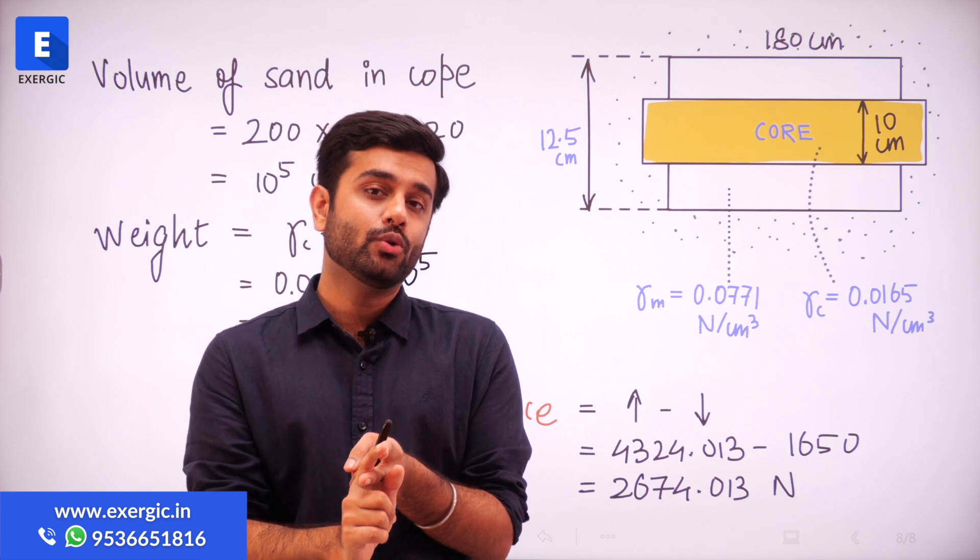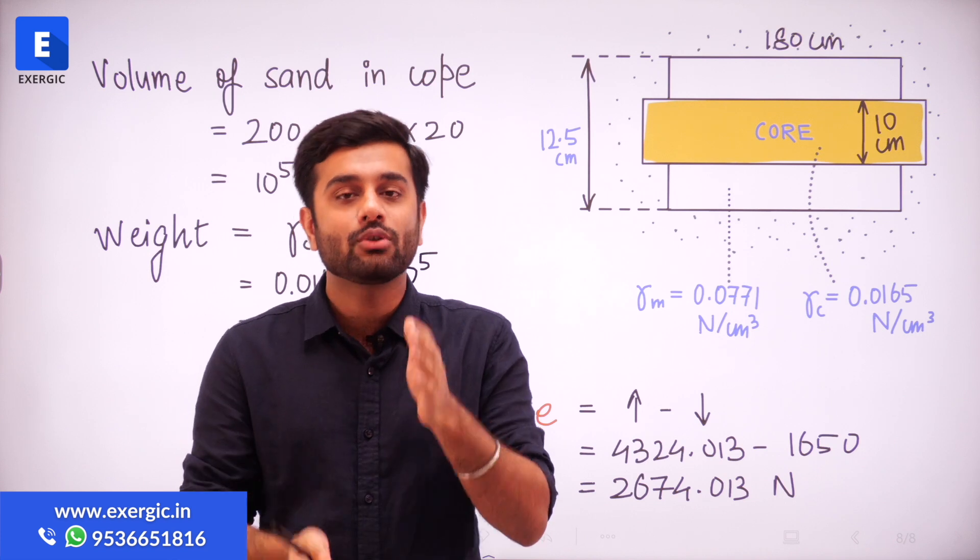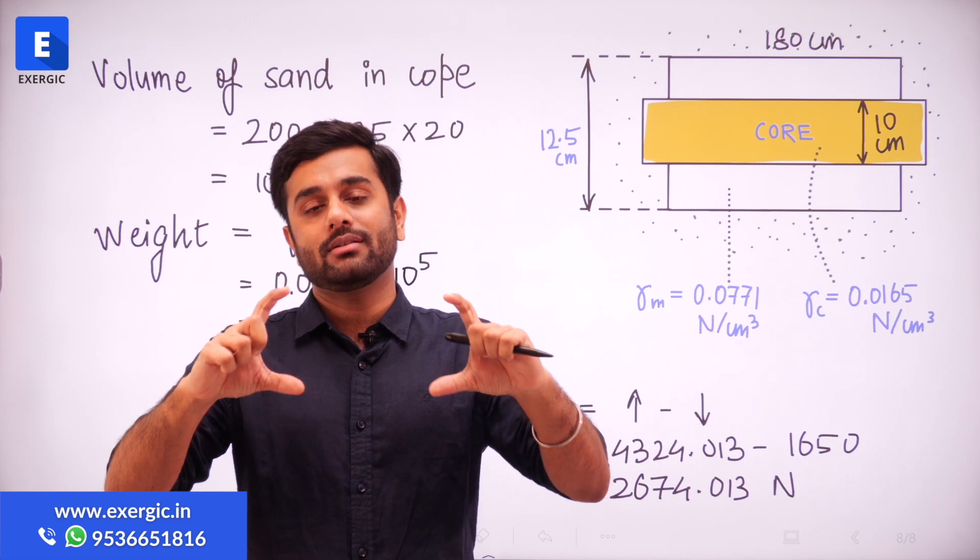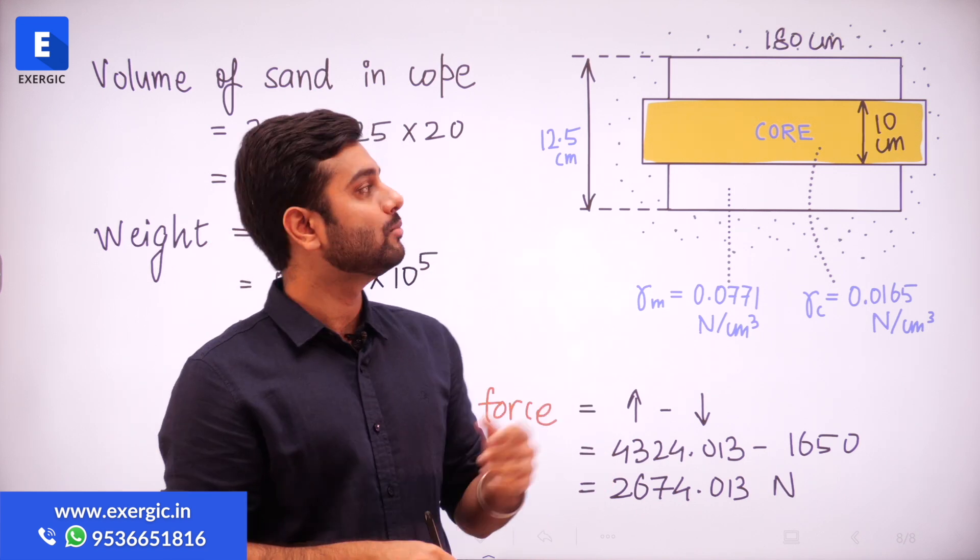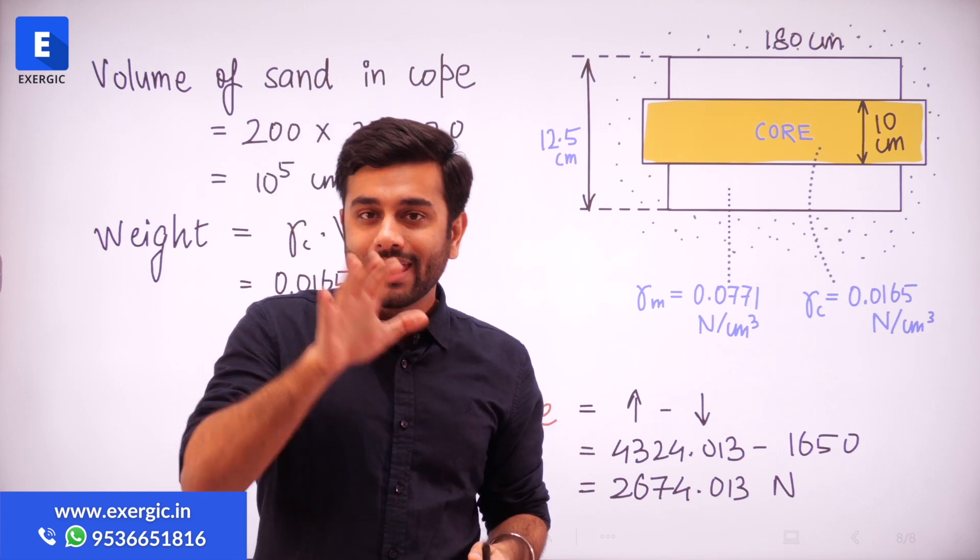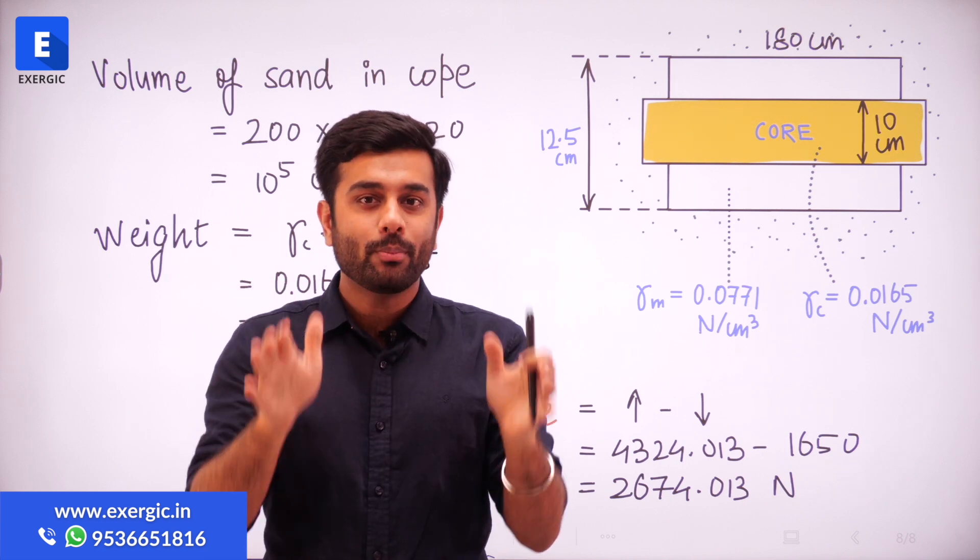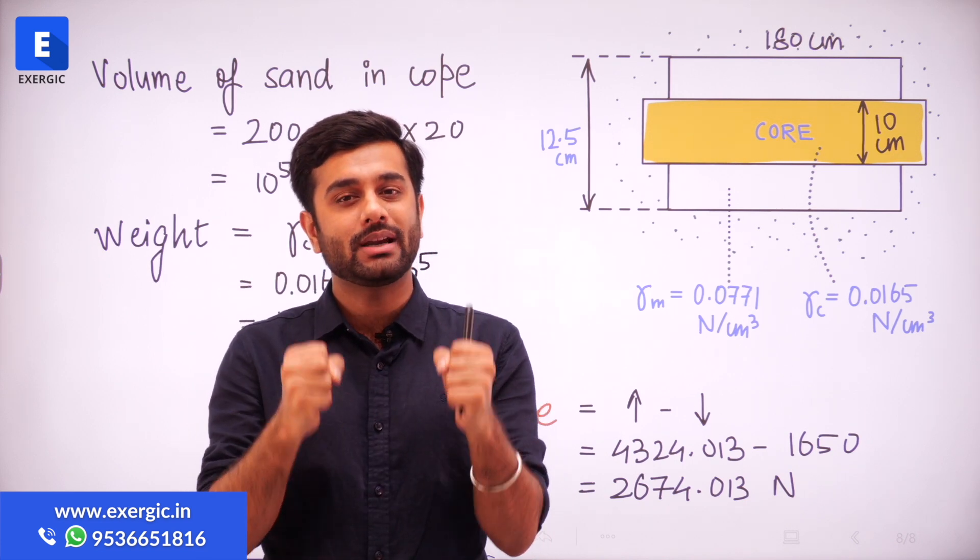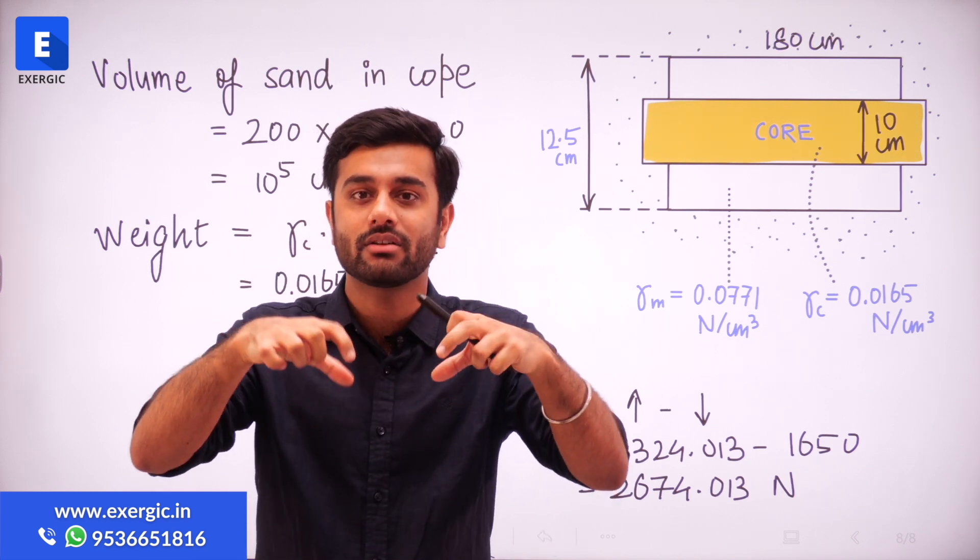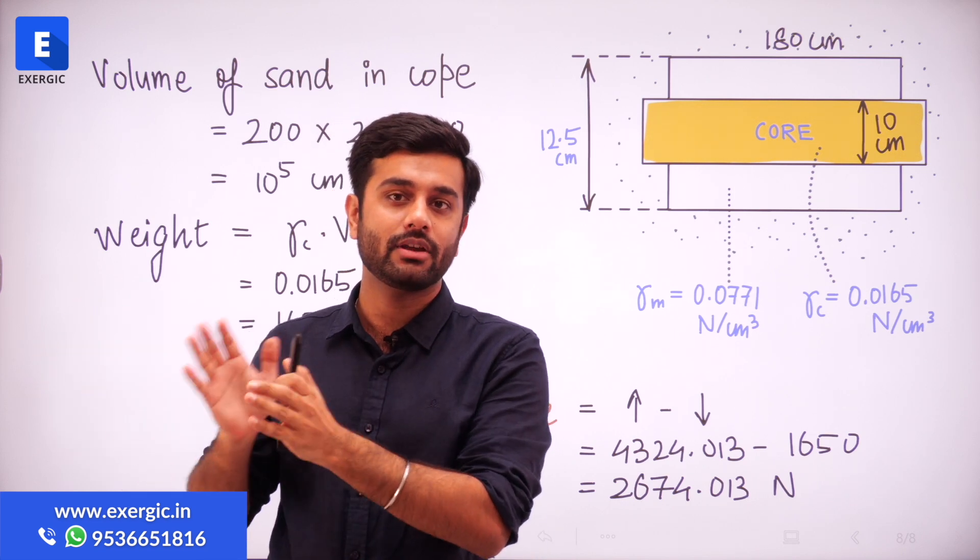Point number two is regarding the weight that we put to balance the metallostatic force. As we know that under the action of metallostatic force, the cope tends to go up. Cope is a molding flask that will tend to go up. To keep that in balance, we put extra weight over the cope. Obviously, we do the proper ramming to ensure the material and the whole structure is strong enough, but we also put extra weight over the cope to balance it. Again, this is something that we have already discussed.